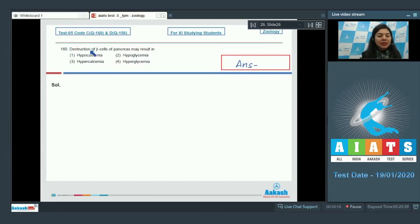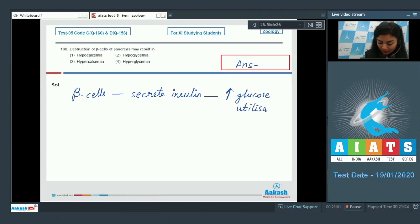Question 160. Destruction of beta cells of pancreas may result in hypocalcemia, hypoglycemia, hypercalcemia, hyperglycemia. The beta cells of pancreas, they secrete insulin and insulin increases glucose utilization within the cells. So, in the absence of beta cells, means when they are destroyed, the insulin levels would decrease.